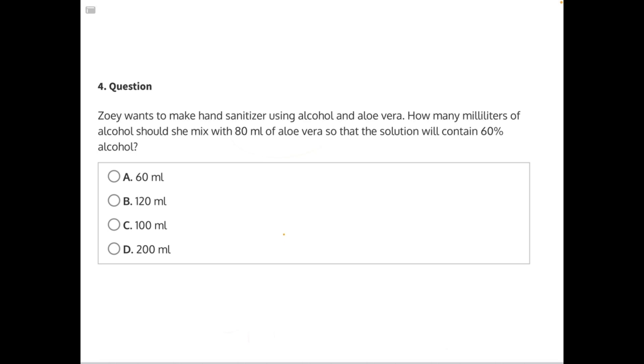Let's start by finding out what percentage of the mixture is aloe vera. If 60% is alcohol, then we need to subtract that number from 100% to figure out what is the remaining percentage of the solution, which would be aloe vera. 100 minus 60 would give us 40. So 40% of the mixture is aloe vera.